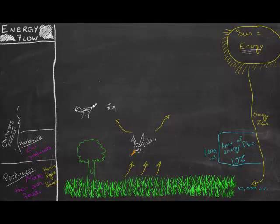Now this organism, the fox, only eats herbivores. It only eats other animals, and those type of consumers are called carnivores. So a carnivore, which is our fox in this example, only eats meat.